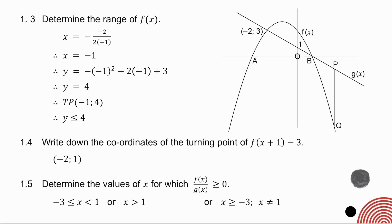Question 1.3 asks you to determine the range of f of x. That's the maximum value I can get with f of x, so I need to calculate the turning point. I use x equals minus b over 2a, then substitute the value I get into the equation, and I get that the turning point is (-1, 4). So my range is y less than or equal to 4.